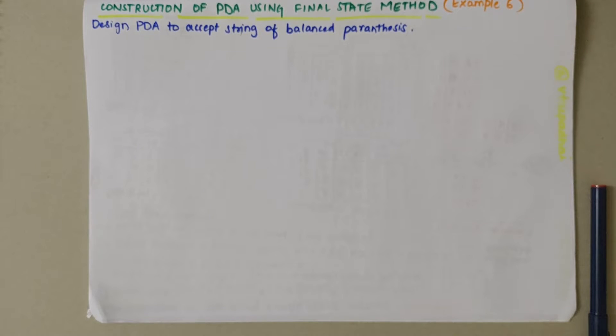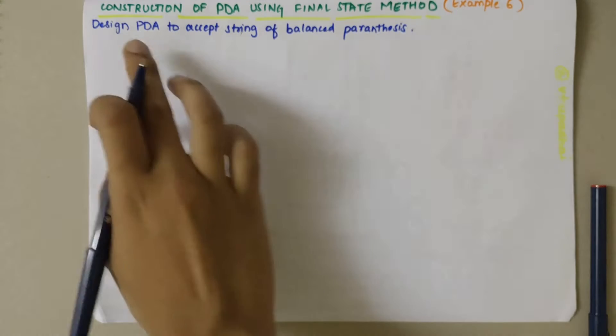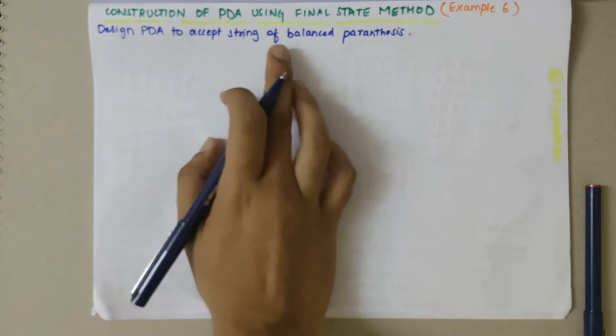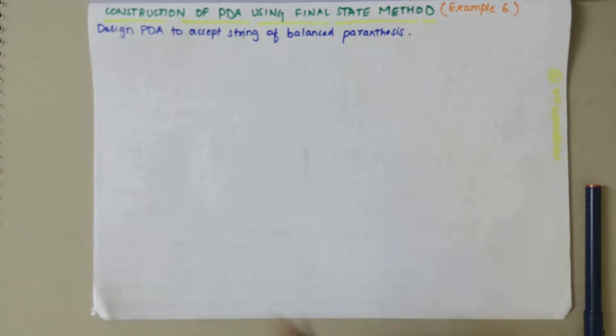In this video we will be looking into construction of a PDA using the final state method. We will be designing a PDA to accept the string of balanced parentheses.